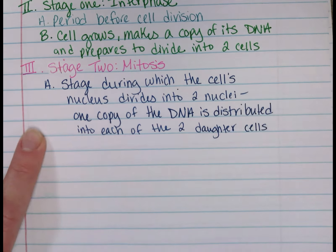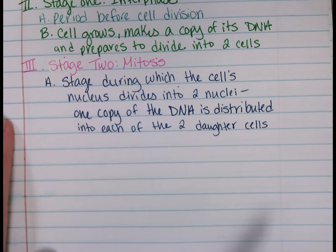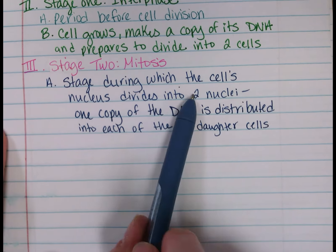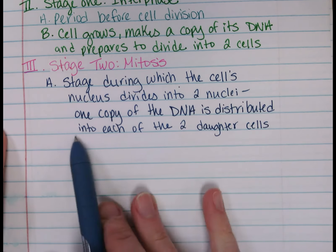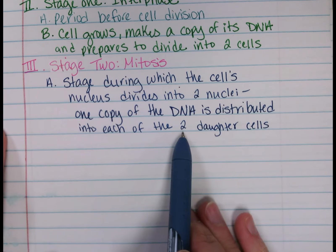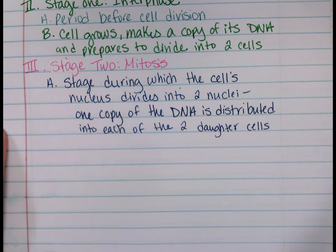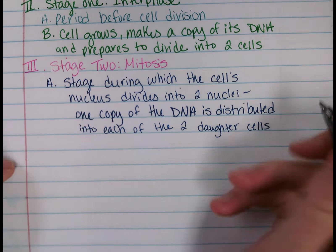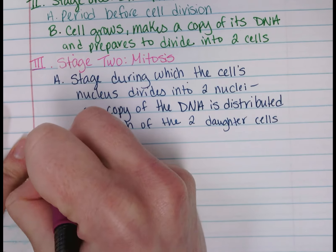The stage during which the cell's nucleus divides into two nuclei — one copy of the DNA, deoxyribonucleic acid, is distributed into each of the two daughter cells. So one copy of the DNA goes to one nucleus, one copy goes to the other, so that each daughter cell has a complete set of DNA. You don't want half the DNA — you're not making sex cells, you're making body cells.